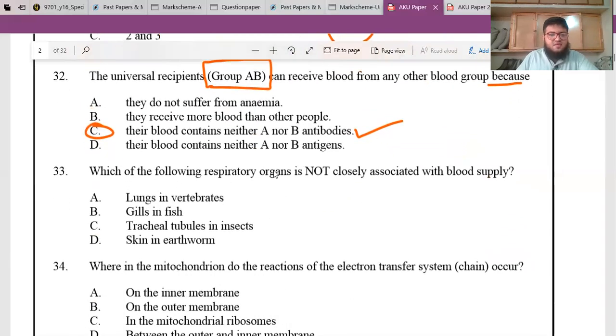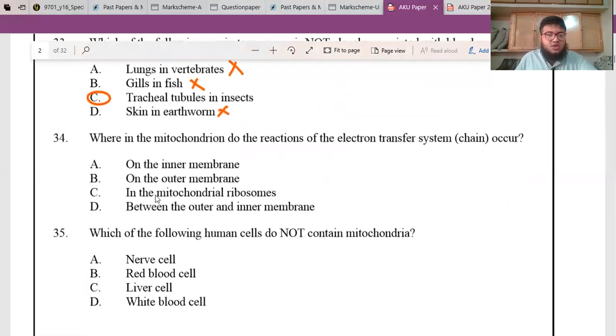Which of the following respiratory organs is not closely associated with blood supply? Lungs and vertebrates with alveoli are close to the capillaries, they are closely associated. Gills and fish also have gas exchange with blood. Skin and earthworm - skin is also used for gas exchange and is close to the blood vessels. The answer is option C, trachea in insects.